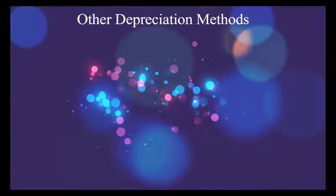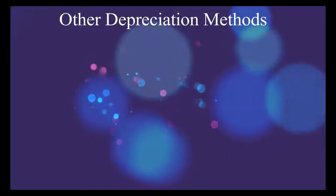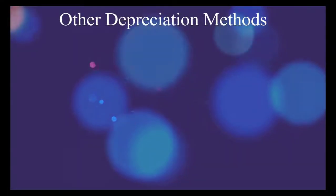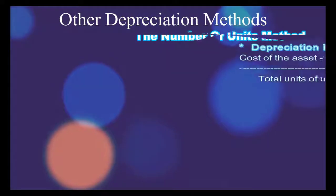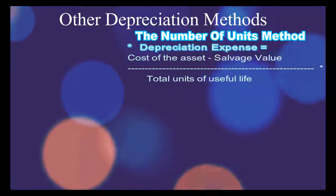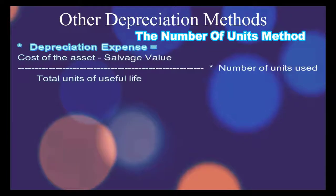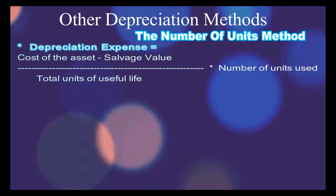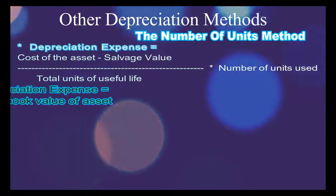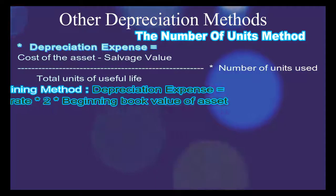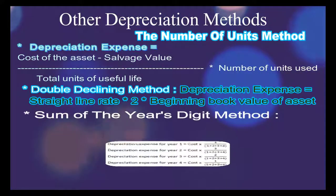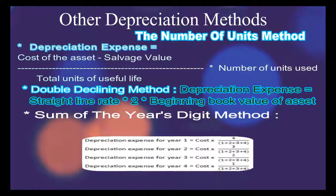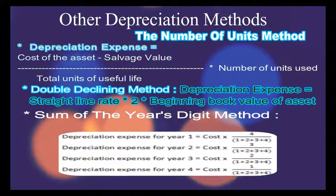The other usable methods are the number of units method. This is the formula for depreciation as per units used. Then comes the double declining method, and finally the sum of the years digits method. For the purpose of understanding, an asset with the useful life of four years is used.